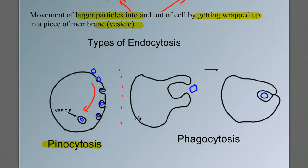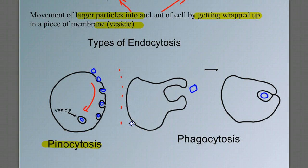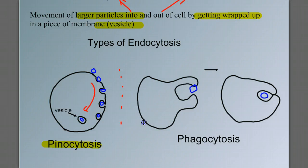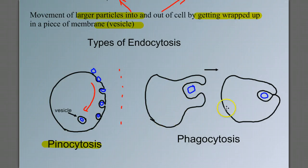Another form of endocytosis called phagocytosis. The cell moves itself, changes its shape, and wraps around the cell particle or the particle. Maybe it's a piece of food. And eventually engulfs it into a vesicle.